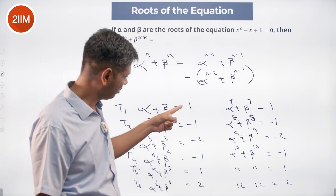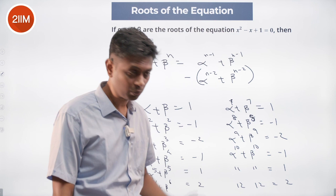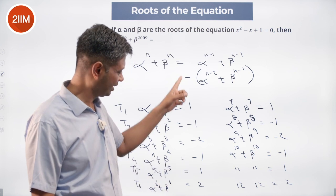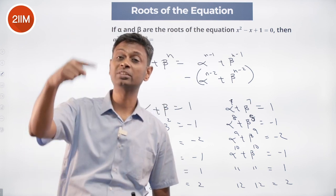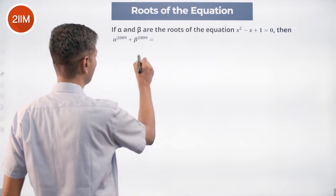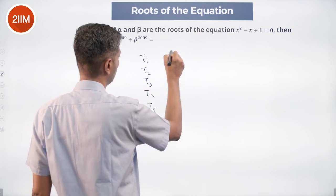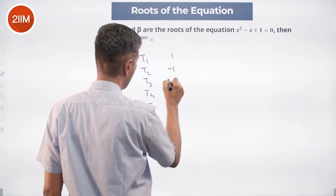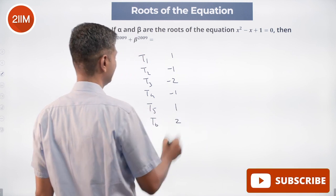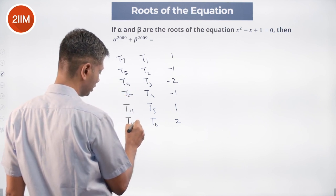The sequence 1, -1 appears again, confirming the cycle. The period-6 pattern is: 1, -1, -2, -1, 1, 2, then repeating: 1, -1, -2, -1, 1, 2 for T7–T12, and so on. So T1 through T6 = {1, -1, -2, -1, 1, 2} and this block of 6 numbers keeps repeating indefinitely.